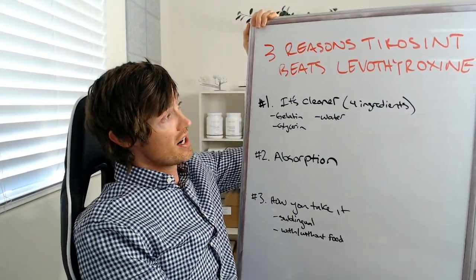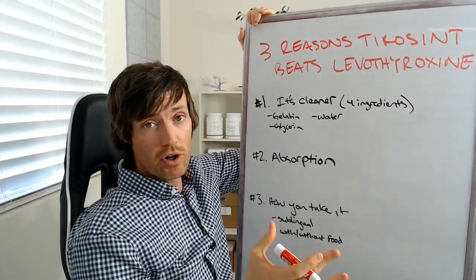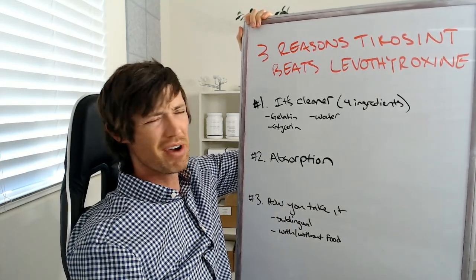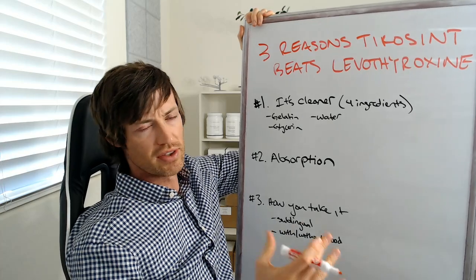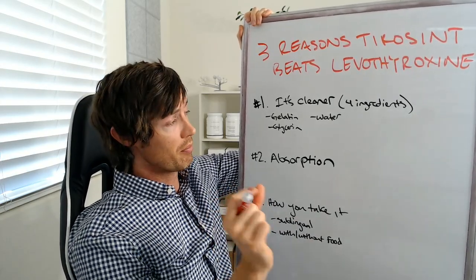The two that we're focusing on, as I mentioned, are Levothyroxine and Tyrosyn. If you haven't heard of Tyrosyn, don't worry, you're probably not alone. It's a relatively new thyroid medication. It came out a couple of years ago, I believe, maybe three at this point now. But it's been out for a much shorter time compared to Levothyroxine, and it has some distinct advantages.